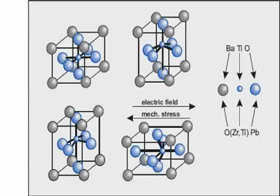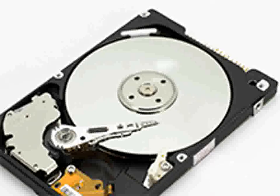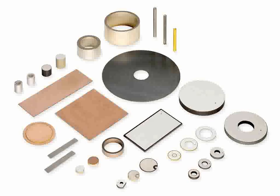Being pyroelectric, this material develops a voltage difference across two of its faces under changing temperature conditions. Consequently, PZT can be used as a heat sensor. PZT is also ferroelectric, which means it has a spontaneous electric polarization — an electric dipole — that can be reversed in the presence of an electric field.